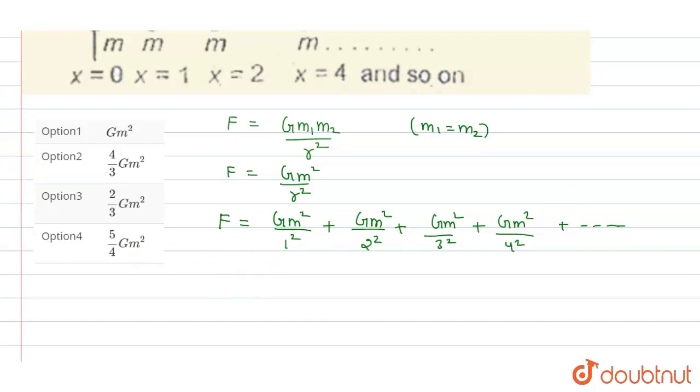So if we reduce it, then F equals... we will take G m squared as common, so it will reduce into 1 by 1 squared plus 1 upon 2 squared plus 1 upon 3 squared plus 1 upon 4 squared, and so on.